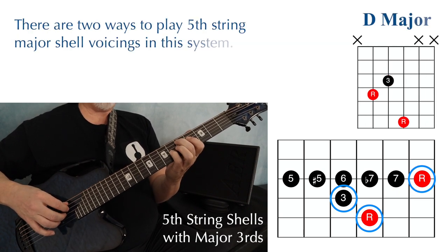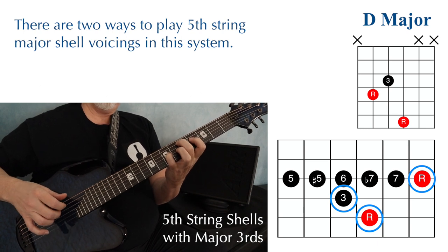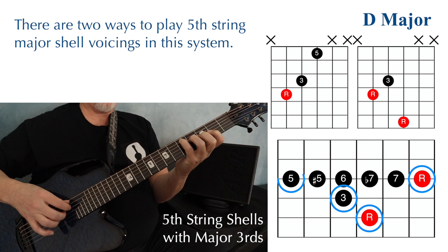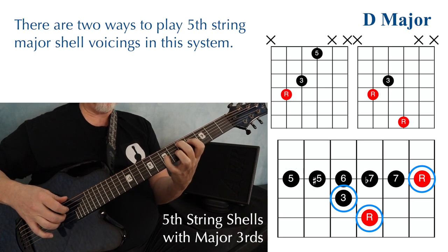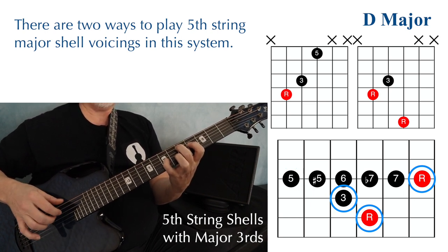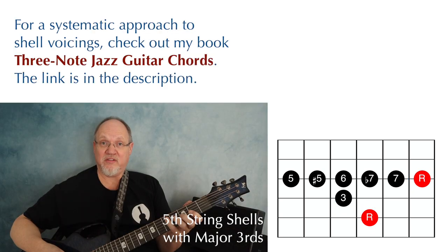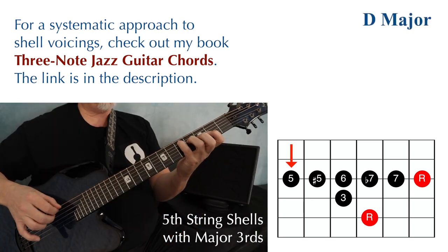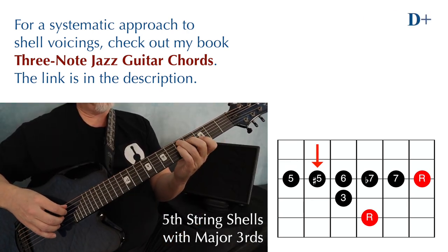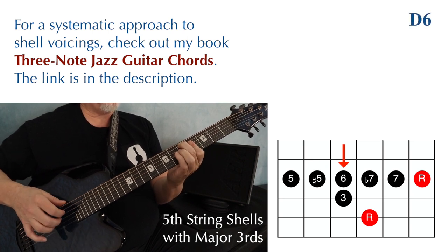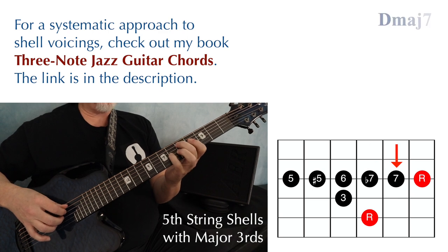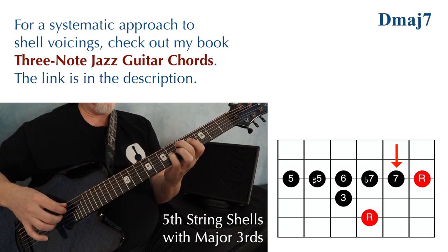Moving it again gives another D major chord, but this time instead of root-three-five, it's root, third, and another root on top. Here's the entire sequence — all D chords because the root is on the note D: D major, D augmented, D6, D7, D major seven, and D again.